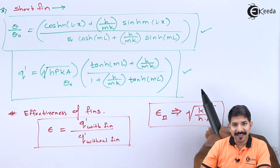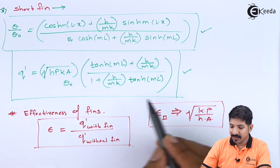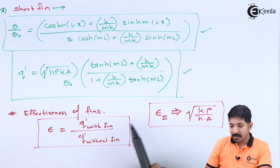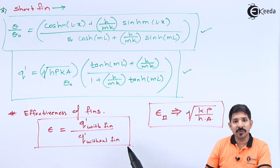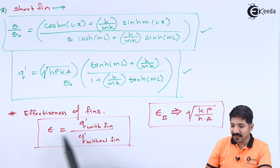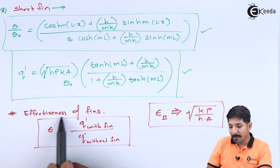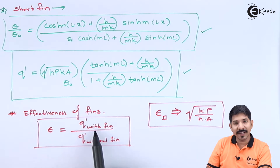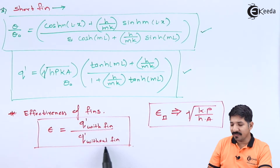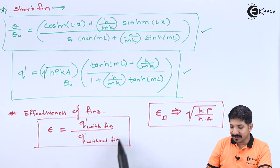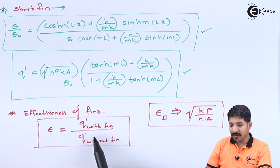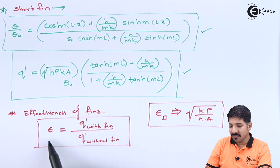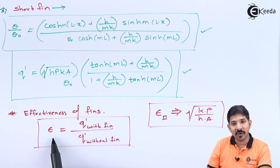After the three analyses, we tried to find out what is meant by the effectiveness of the fin. The use of a fin may not guarantee an increase in heat transfer rate — this is shown through the term called effectiveness. Effectiveness is the heat transfer rate with the fin divided by the heat transfer rate without the fin, giving various expressions for different cases.